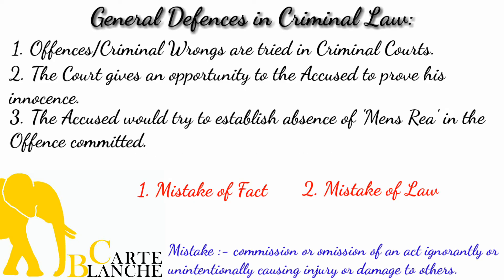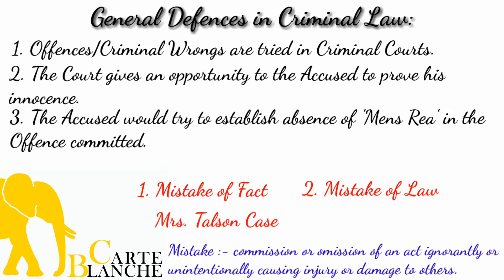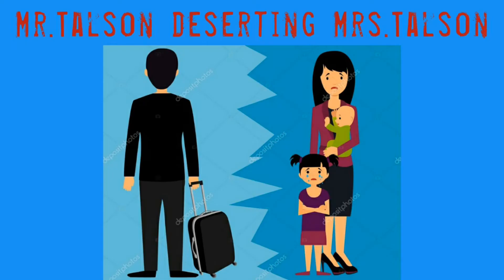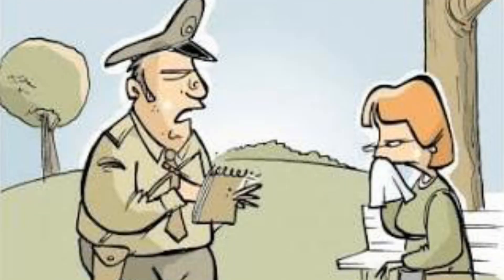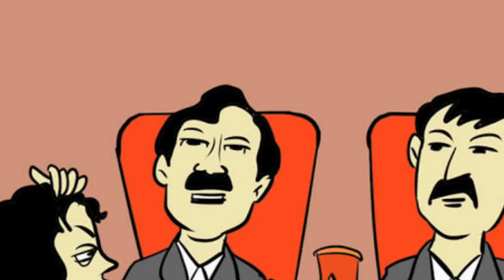Let us consider two relevant case laws to better understand the concept of mistake of fact and mistake of law. The first case law is about Mr. and Mrs. Tarleton. In this case, Mrs. Tarleton married Mr. Tarleton, but soon after the marriage her husband deserted her. Mrs. Tarleton searched for information about her husband for more than seven years, made all enquiries, and learned from reliable sources that he had died in a shipwreck. As a consequence, Mrs. Tarleton got remarried. The act of Mrs. Tarleton in getting remarried under the belief of her husband's death is nothing but a mistake of fact. The court accepted this as a good defence, and she was held not guilty of bigamy and was acquitted.